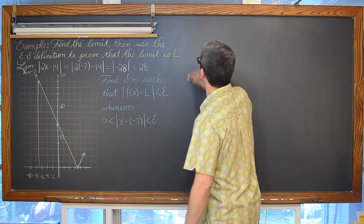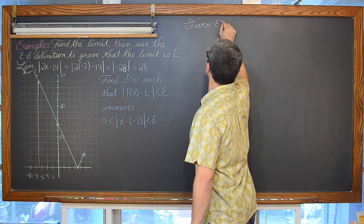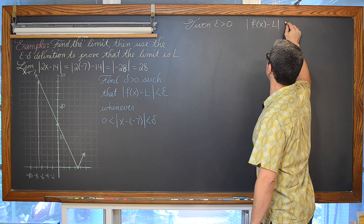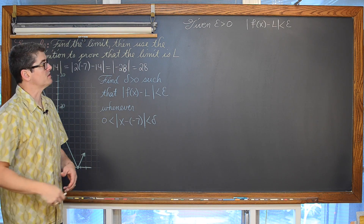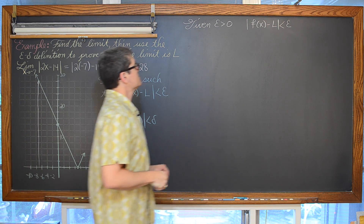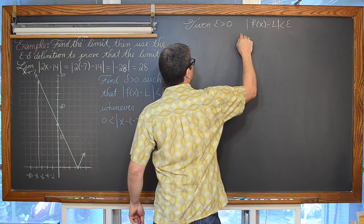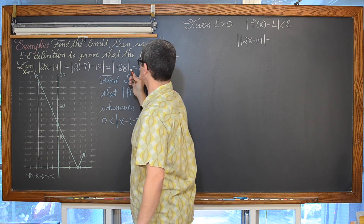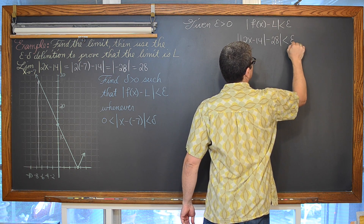So again we are going to say given that epsilon is greater than zero, that the absolute value of f(x) minus L is less than epsilon, assuming that to be true as we work out the relationship between delta and epsilon. This is scratch work, not the beginning of the proof. The absolute value of 2x minus 14 minus 28 is less than epsilon.